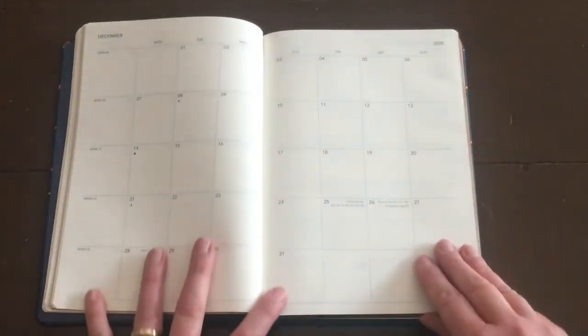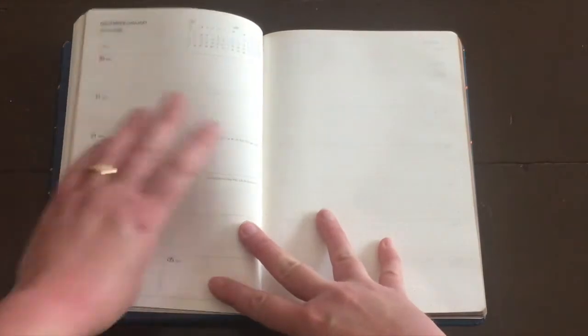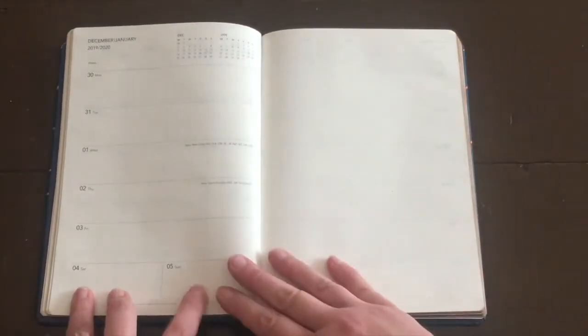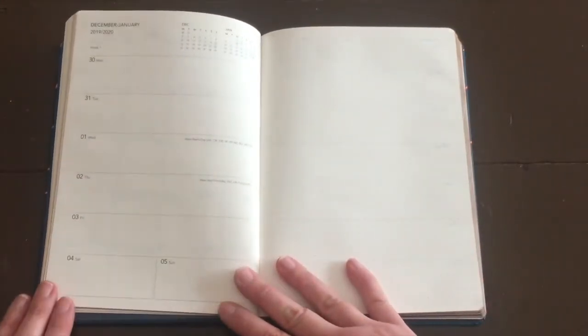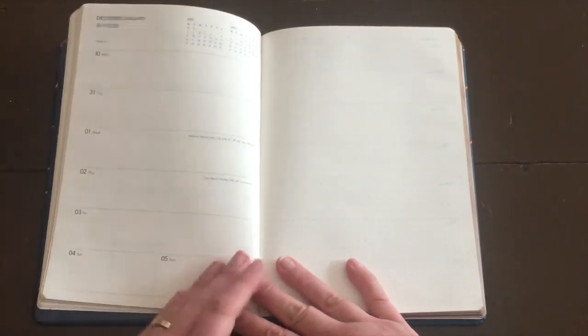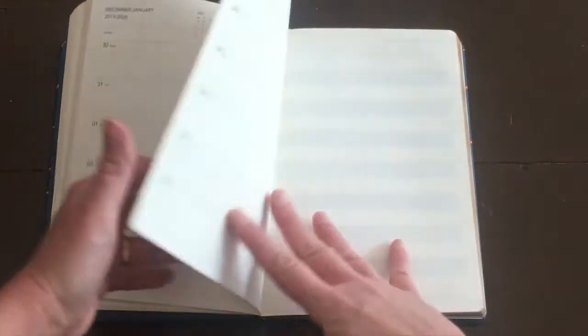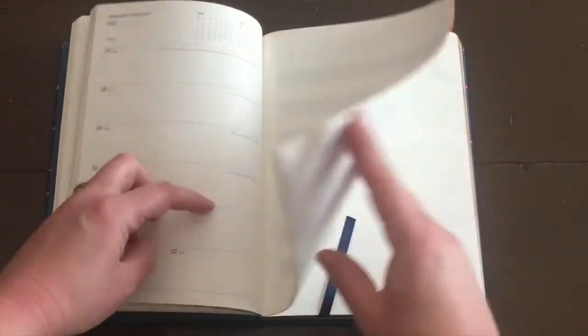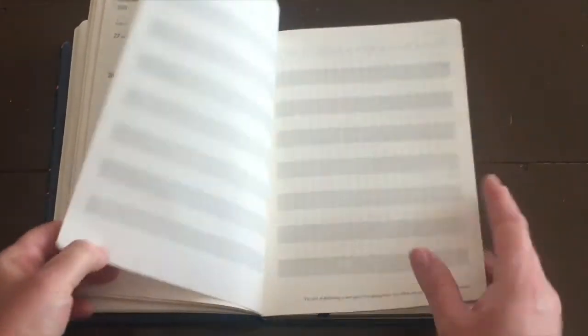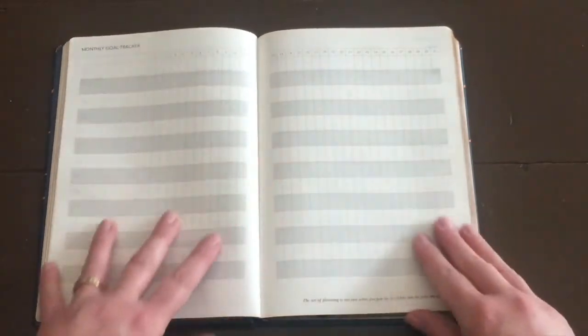So once you finish going through your month by month, it'll do all of the months in one go. And then you'll start to get into the week at a time. So the week at a time is really nice. Again, you've got your days of the week on the left hand side and then a bullet journal style page on the right hand side. So you can be a little more creative and a little more imaginative and a little more artistic with it.